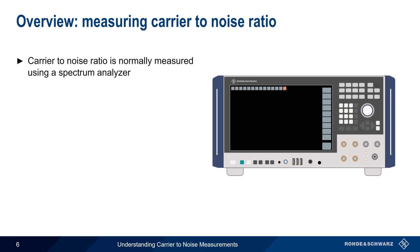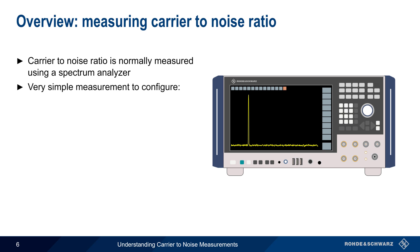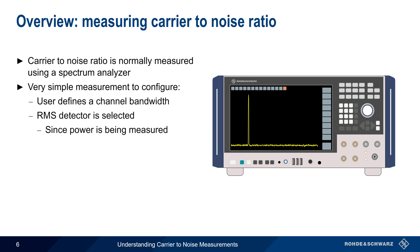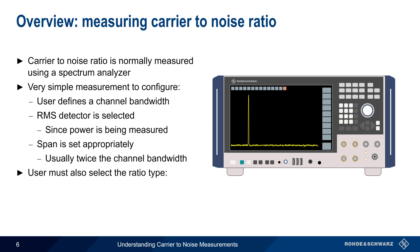Carrier-to-noise ratio is normally measured using a spectrum analyzer, and it's generally a very simple measurement to configure. The user defines a channel bandwidth, selects the RMS detector since power is being measured, and sets an appropriate span — typically twice the channel bandwidth. The user must also select a type of ratio, either carrier-to-noise or carrier-to-noise density. In the remainder of this presentation, we'll explain the difference between these two types of ratios and provide more detail into how both of them are measured.